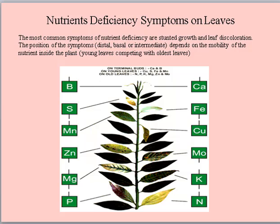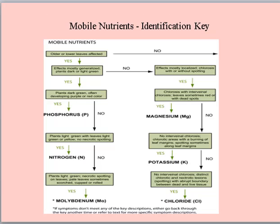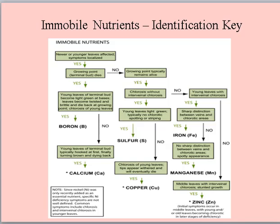Young leaves compete with old leaves. Mobile nutrients — identification: K. Immobile nutrients — identification: K.